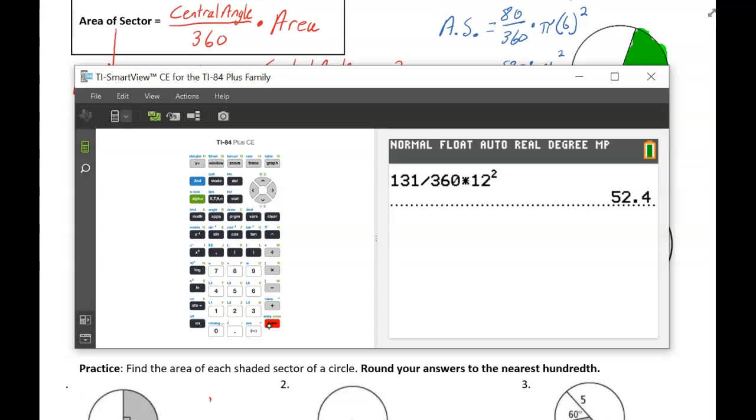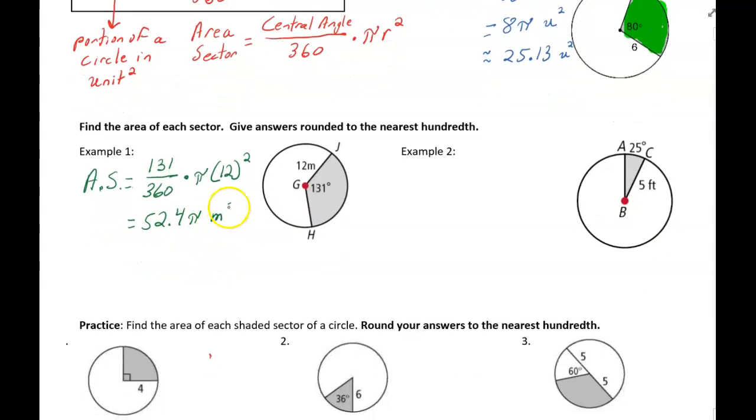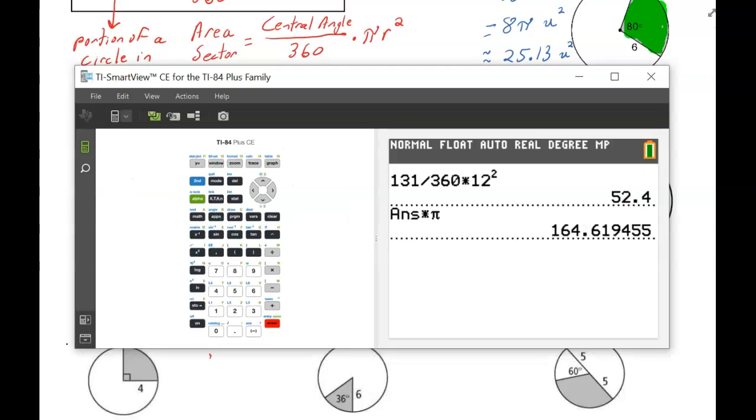So it's 52.4 pi. And then I'm going to say multiply by pi. And then there's the decimal approximation. So the area of the sector, when you typed it in, was 52.4 pi meters squared. And you saw on the calculator, when I typed it in, I got 164.62 meters squared. So that 6.1 rounds up to 6.2.